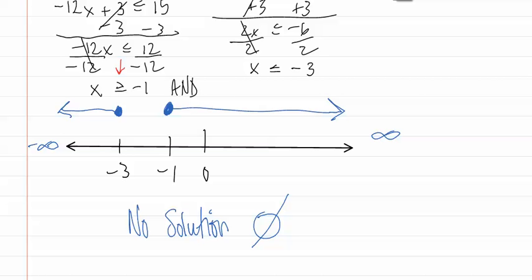Remember, when solving compound inequalities there are two special cases: an 'or' that can give you all of the number line, or all real numbers; and an 'and' that can give you none of the number line, or no solution.